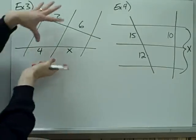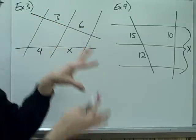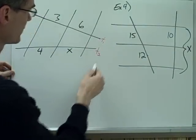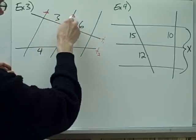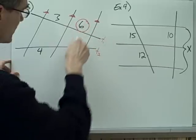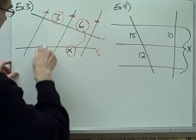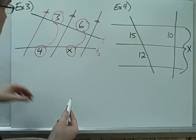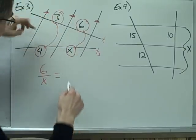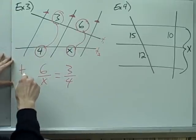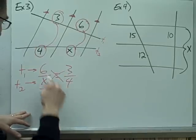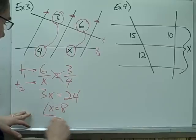Example number 3: this is basically the same picture except turned on its side, so it looks a little different. I've got transversal 1 and transversal 2, and here are my three parallel lines. The parallel lines divide the transversals into proportional parts. I set up a proportion: 6 over 3 equals x over 4. Cross-multiplying gives 3x equals 24, so x equals 8.